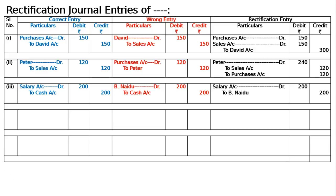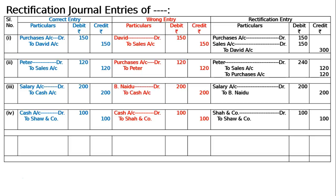Case (d): Rs. 100 received from Saw and Company was wrongly entered as from Saha and Company. The correct entry is cash account debited to Saw and Company, 100 and 100. The wrong entry is cash account debited 100 to Saha and Company, 100 and 100. To nullify the mistake: Saha and Company debited 100, and to bring Saw and Company into credit, write credit to Saw and Company, 100. The rectification narration will be: cash received from Saw and Company, credited to Saw and Company, rectified.